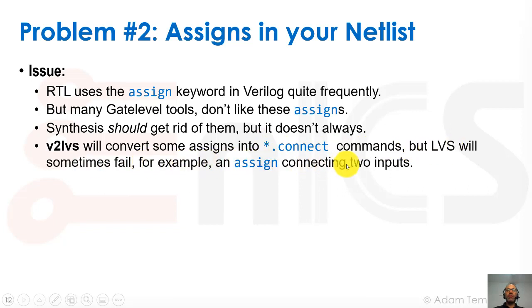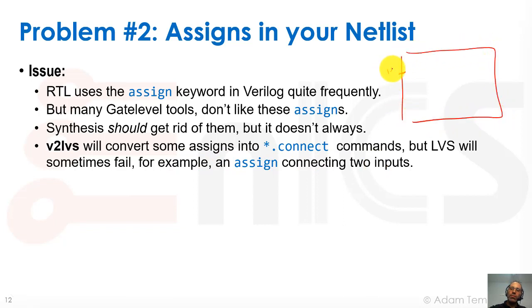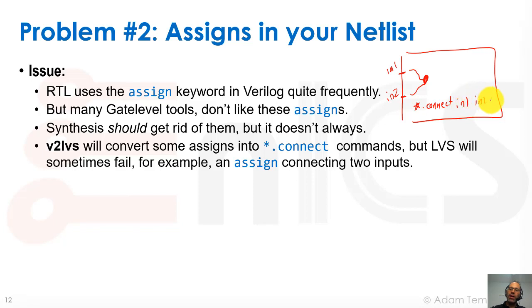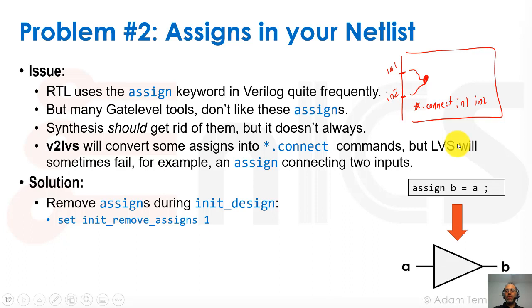But LVS will sometimes fail. For example, an assign connecting two inputs — we may have a design where we have input one and input two with a star dot connect in our SPICE file. I've seen many LVS tools that will actually fail due to a thing like that. So we want to just get rid of the assigns so this will not appear in LVS. It's done in synthesis — an assign like assign B equals A just turns into a buffer, a standard cell buffer. It costs us the extra couple of transistors, but it's worth getting rid of to avoid these problems in LVS.